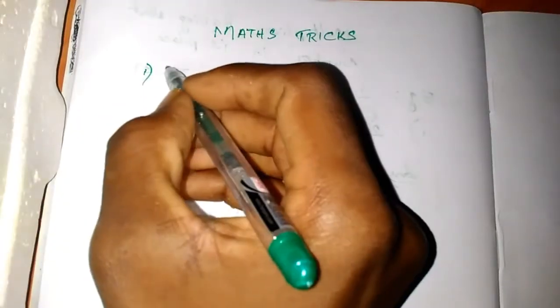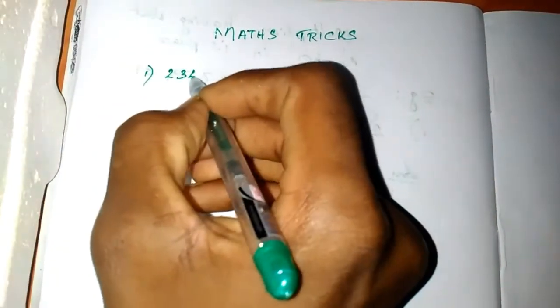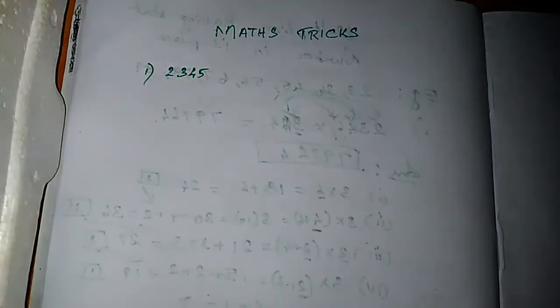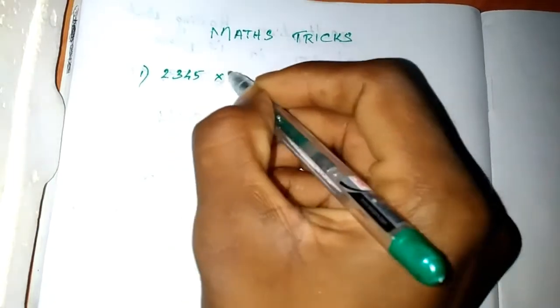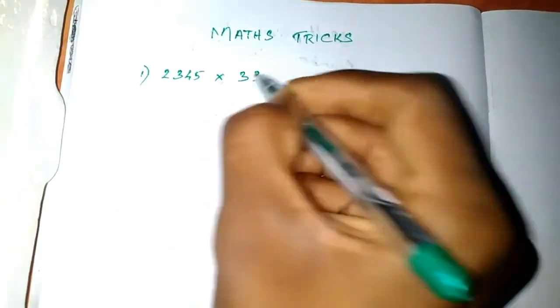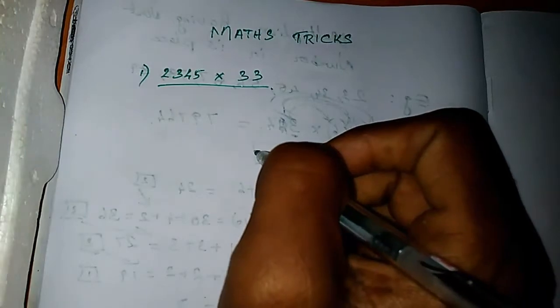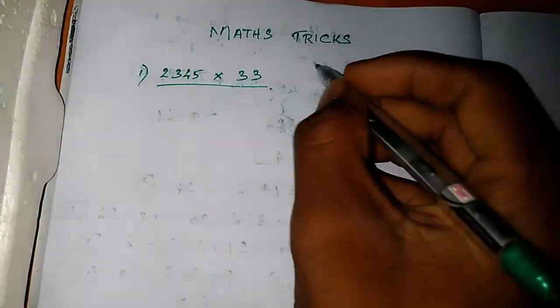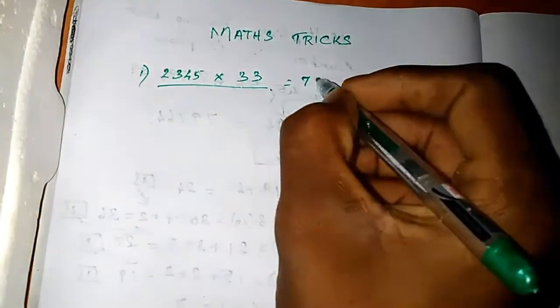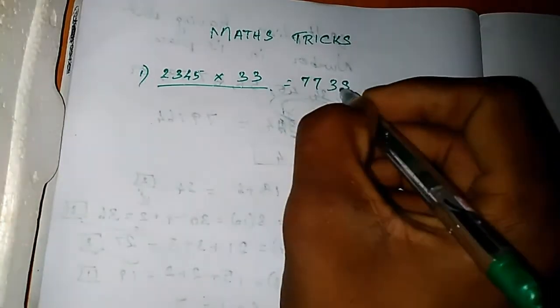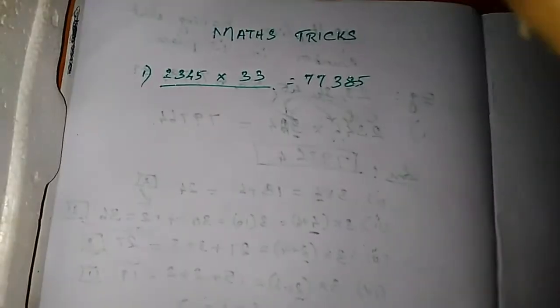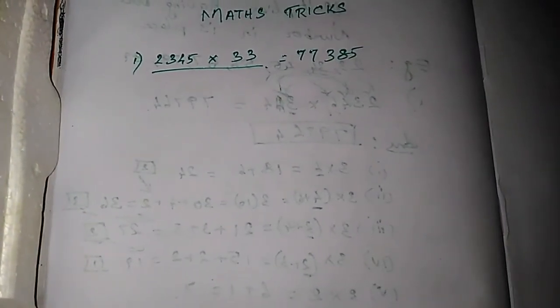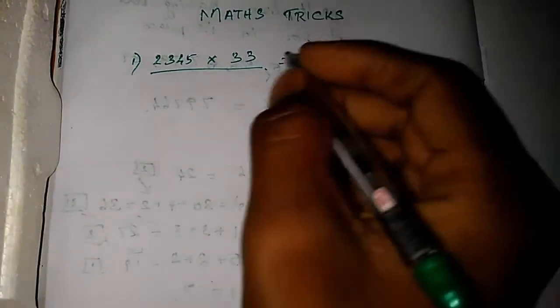We will use the green color pen. Now I will use the brightness. You can write the answer in our example — seven, seven, three, eight, five.